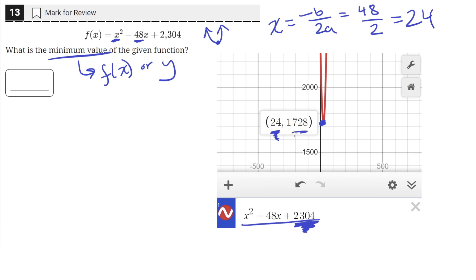This is what we got up here using negative b over 2a: 48 over 2 is 24. And then the value of the function at that value of x at the vertex is 1728.